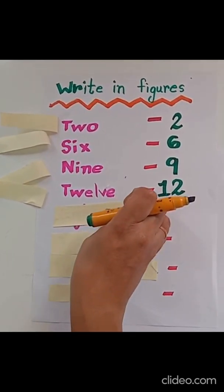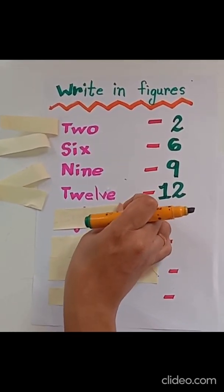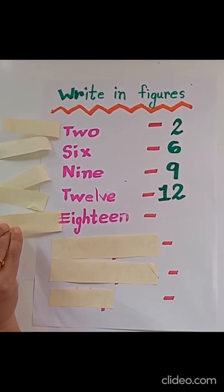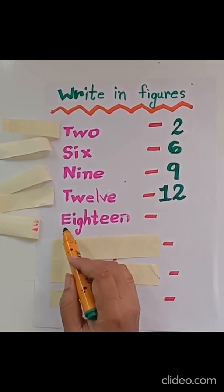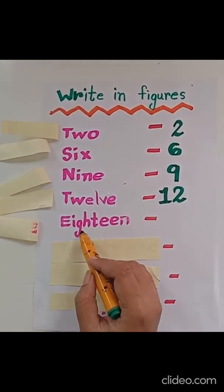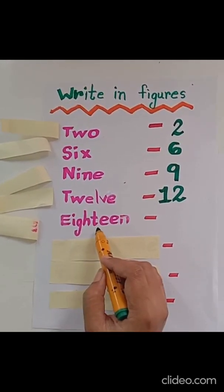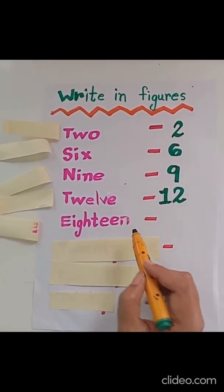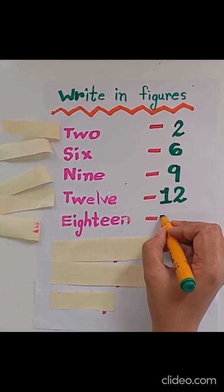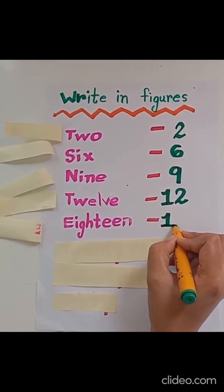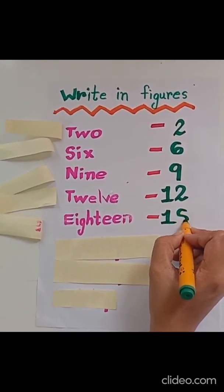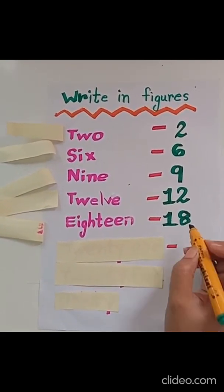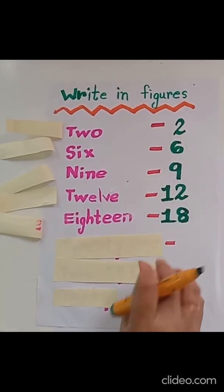Let's see the next number name, children. E-I-G-H-T-E-E-N, 18.